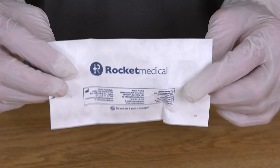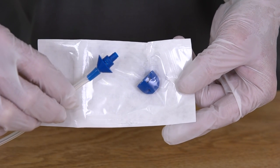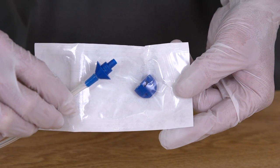One of the sealed packets contains a single large ROCKET catheter cap. This cap will be used if the patient's indwelling catheter looks like this.